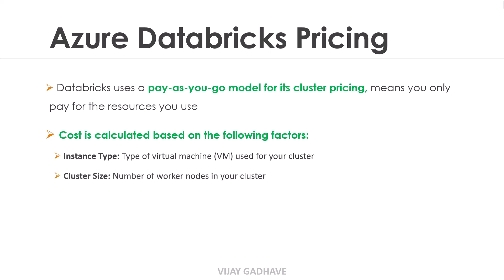The second factor is cluster size — the number of worker nodes in your cluster. Each worker node adds to the overall cost. The third factor is cluster usage time, which is the amount of time your cluster is running. Note that Databricks bills on a per-second basis.